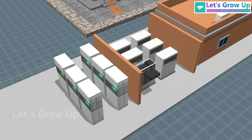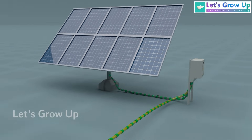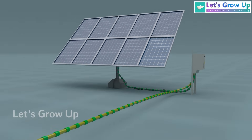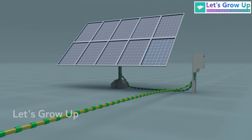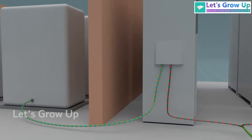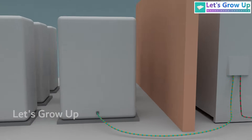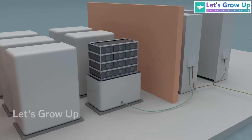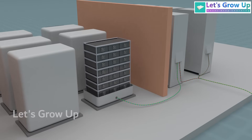Battery banks are typically installed before or after the inverter stage in a solar power system. Once the electricity is converted from DC to AC by the inverter, any excess energy can be stored in the battery bank for later use.